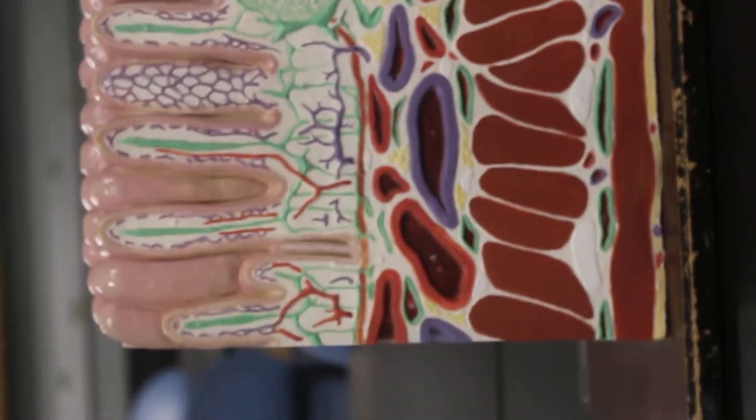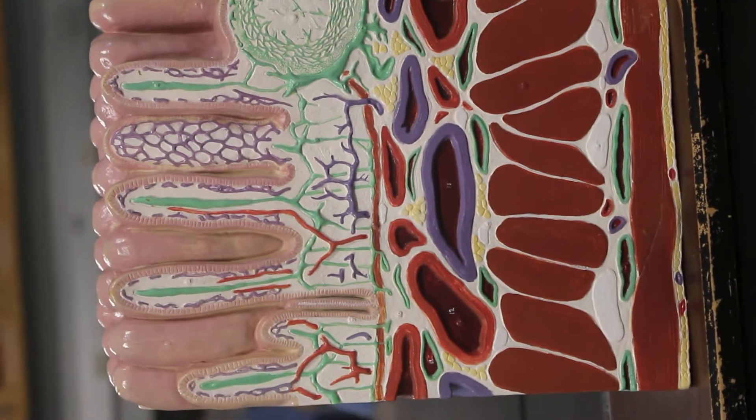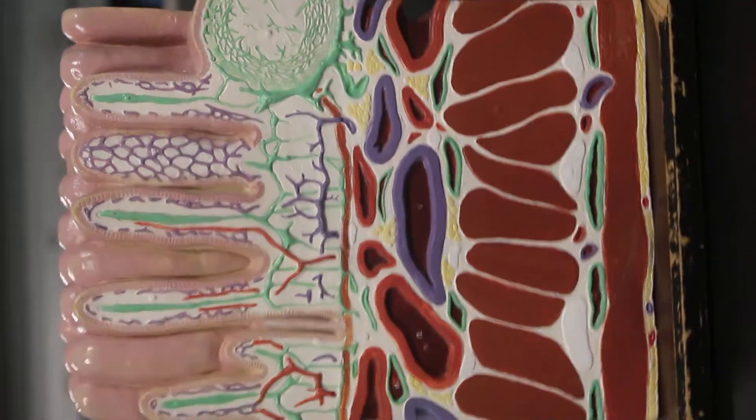Here is the intestinal villi model. This is a model that is a cross-section, a piece of the wall of the small intestine.